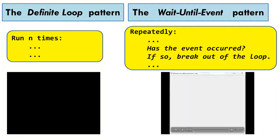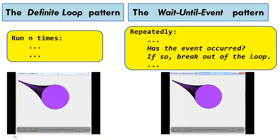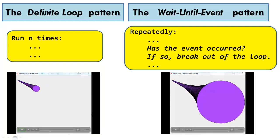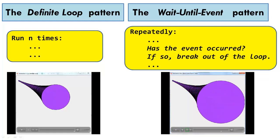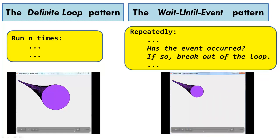On the left-hand side, we see the definite loop pattern. It runs a fixed number of times — here, 150 times. On the right-hand side, we see the wait-until-event pattern. It repeatedly asks, has the circle grown too big for the window? If so, break out of the loop and stop.